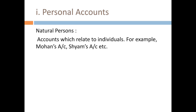We have three accounts: personal account, real account, and nominal account. Under personal accounts, one type is natural persons — for example, Sham account and Mohan account. These are very common transactions, and that is why we keep these accounts.